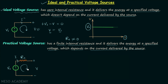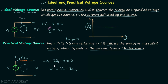Applying KVL again, we get: plus Vs minus I·Rs minus V equals zero. From here we get V equal to Vs minus I·Rs. Comparing this with the ideal case, in the ideal case the terminal voltage V is independent of the current I, but here in the practical case the terminal voltage V depends on the current drawn from the source I.